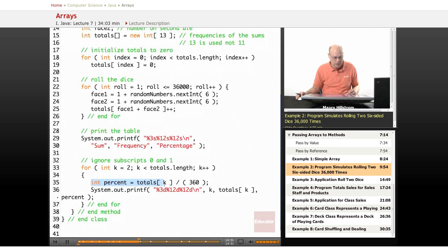Then we say that we want to, for the percentage, we want to divide it by 360. That'll bring it down to a standard percentage number like 10, 20, or 30. Then we're going to print out our totals.